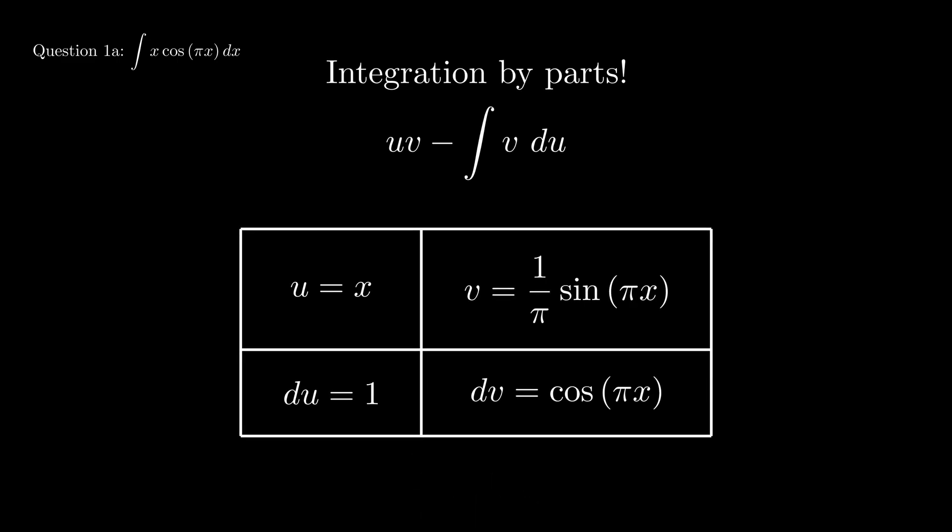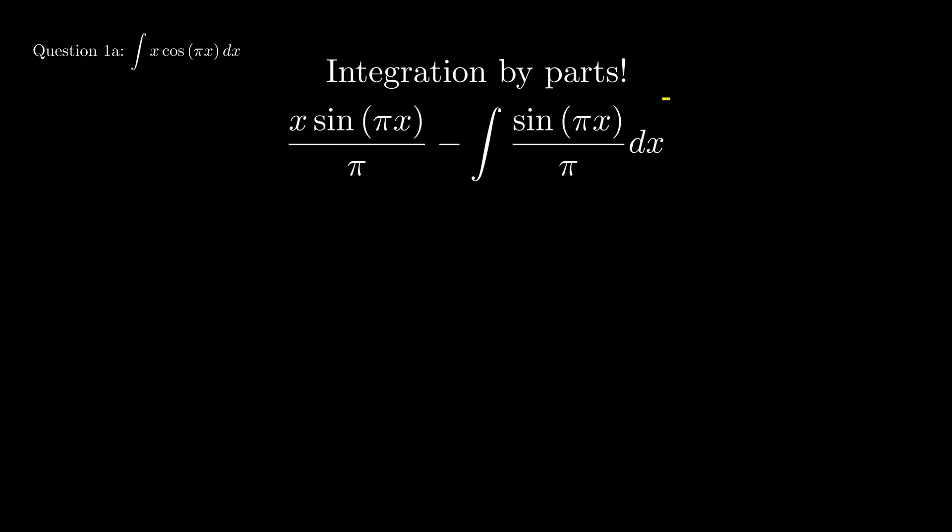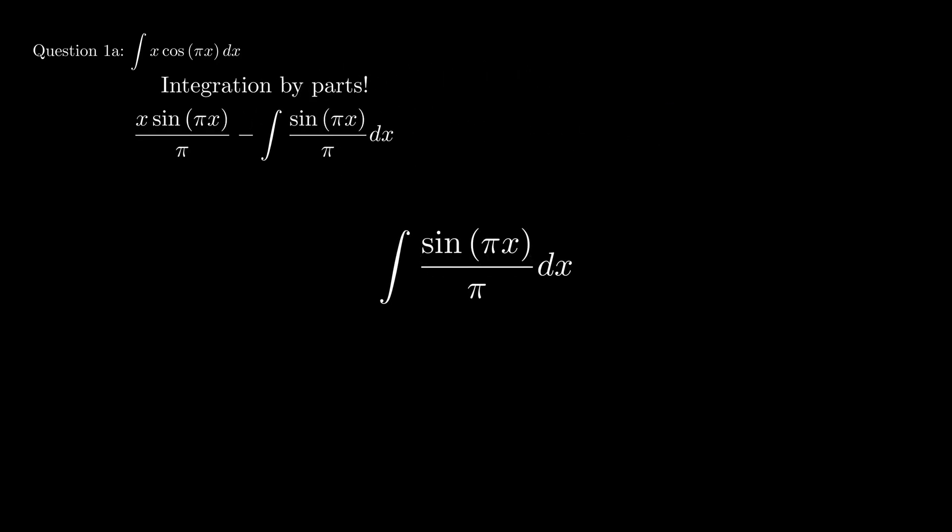But we're not done yet. We need to plug this into our equation of integration by parts. However, we have a problem. Vdu, or as Dr. Bernhardt likes to call it, voodoo, certainly does look like voodoo. We're going to need to use u substitution once more in order to integrate voodoo.